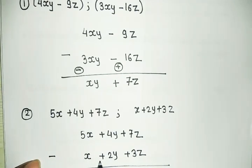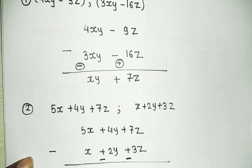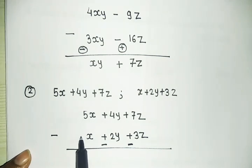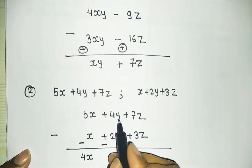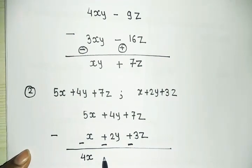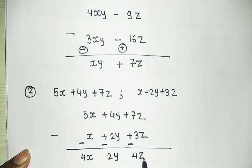This minus sign will change the signs of the second expression. Where there is a plus, it will become minus. First, change the signs: plus becomes minus, plus becomes minus. Now 5x minus x is 4x. 4y minus 2y is 2y. And 7z minus 3z is 4z.